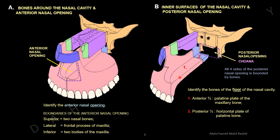This is the floor of the nose. The anterior three-quarters is formed by the palatine plate of the maxillary bone, and the posterior one-quarter is formed by the horizontal plate of the palatine bone. Together they form the floor of the nose, also called the hard palate, which separates the nasal cavity above from the oral cavity below.